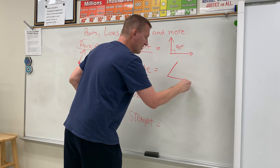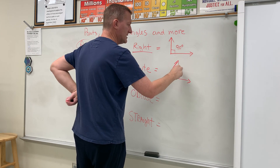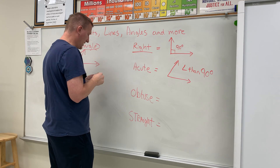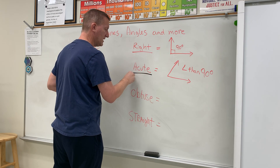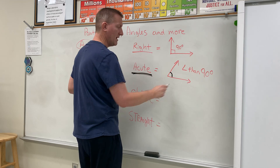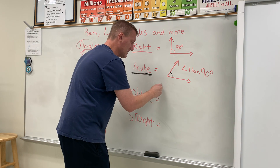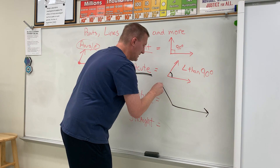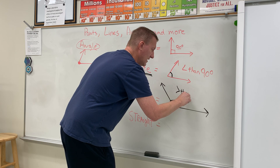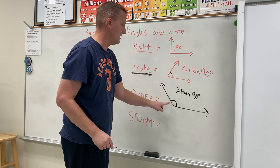Now what if the angle is less than 90 degrees? If it's smaller than this 90-degree angle — this one here is smaller than 90 degrees — that is an acute angle. So if an angle is less than 90 degrees, it is an acute angle.